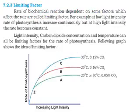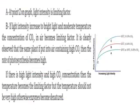Now, the limiting factors are the factors on which the photosynthesis process depends. There are three factors: light intensity, carbon dioxide concentration, and temperature. These can all be limiting factors for the rate of photosynthesis. There is a graph which shows the limiting factors, with three curves A, B, and C showing different conditions.